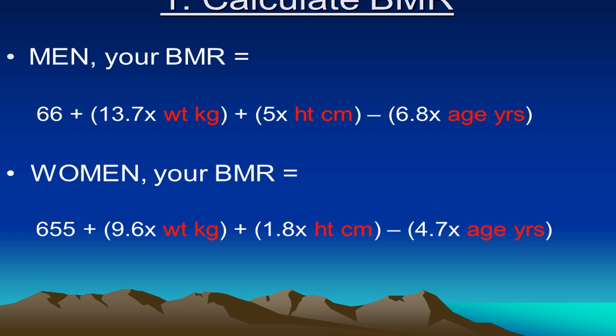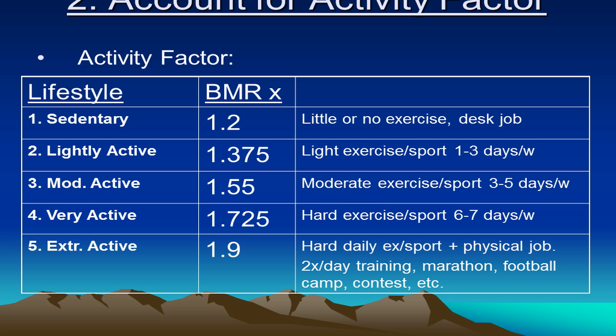If you remember in previous sessions, we looked at this basic calculation for how to calculate our basal metabolic rate — there's an equation for men and one for women. Once we've got our basal metabolic rate, dependent on our sex and our size, we can use this activity factor. Someone who's quite sedentary multiplies their basal metabolic rate by 1.2, right up to someone who's extremely active at 1.9 — so basically almost twice as much as their basal metabolic needs, to account for the added calories needed to support their activity levels.